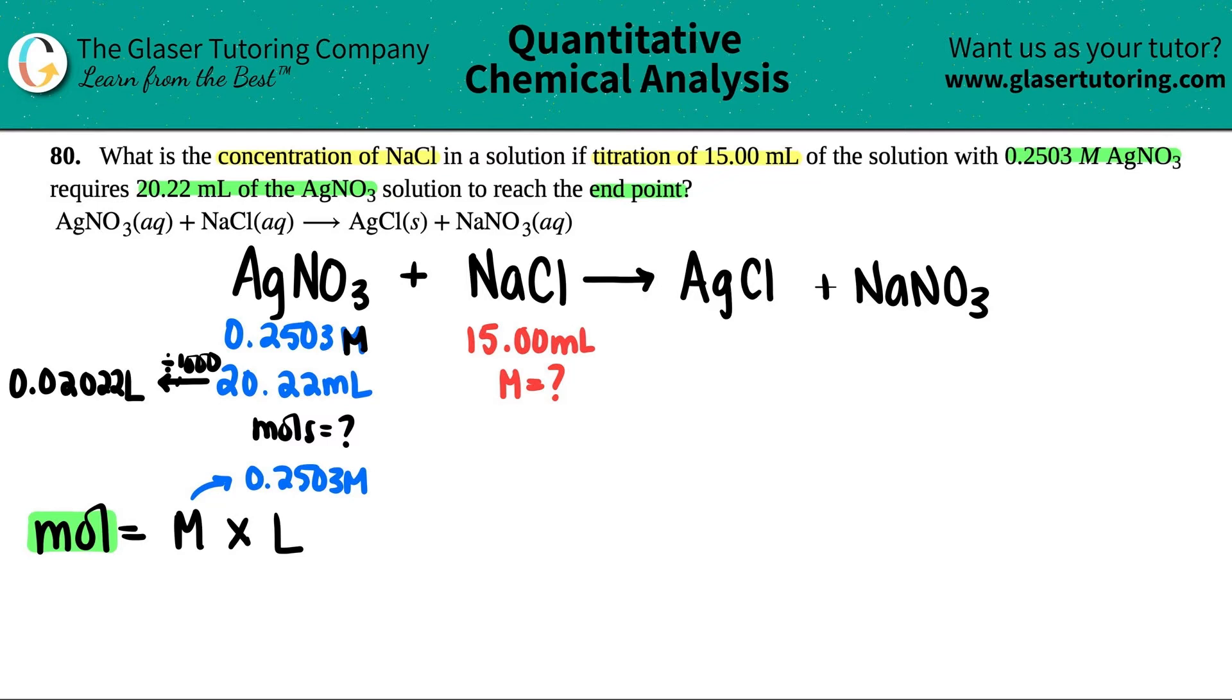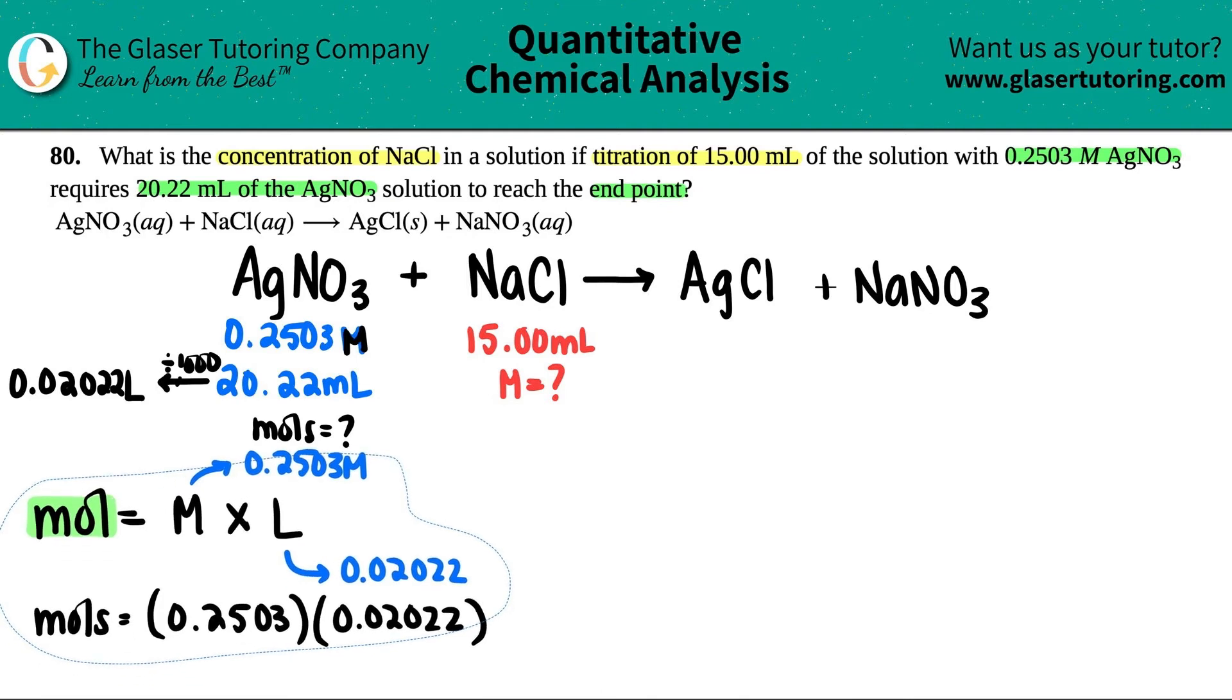I just want to double check that my zeros are in the right spot, but there we go. So now I can multiply the two numbers together to get my moles. So the moles equals 0.2503 times 0.02022. In this case, since this is not the answer, I won't really cut it off with sig figs. I'm just going to say that this is the number of moles was 5.061 times 10 to the negative three, and that's moles of AgNO3.